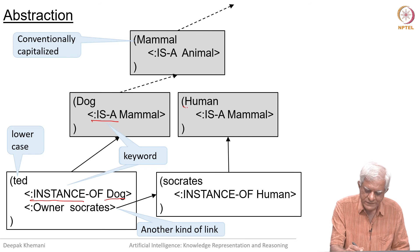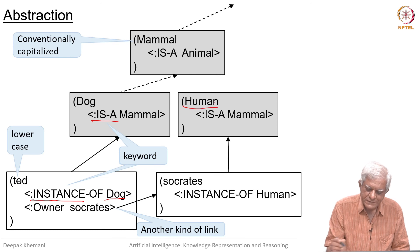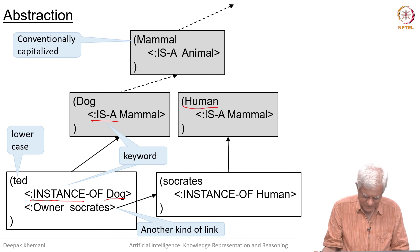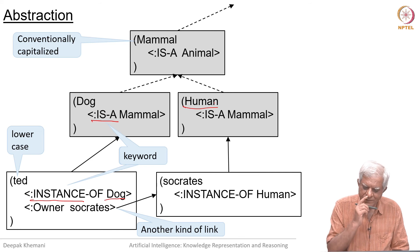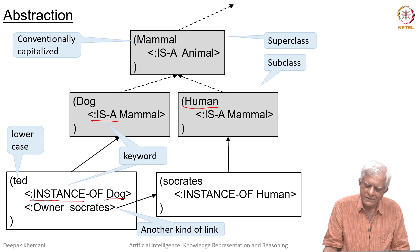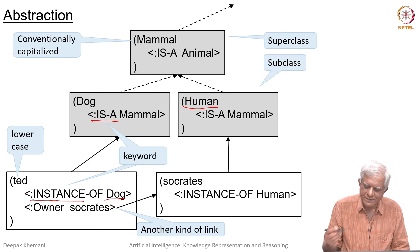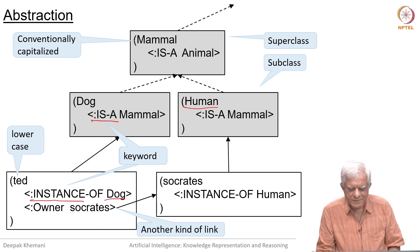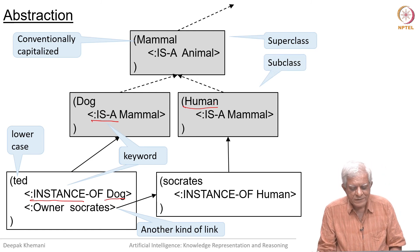Conventionally, generic frames should be written in capital letters and individual frames in lower case. We can have other kinds of links — for example, owner is Socrates, and Socrates points to a frame for the individual Socrates, who is an instance of human. Human is a mammal, so there is another edge going from human to mammal, and you can see the superclass-subclass relationship in a frame system.